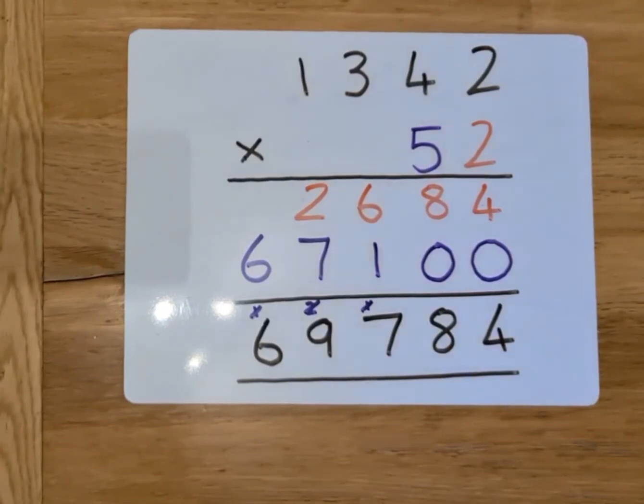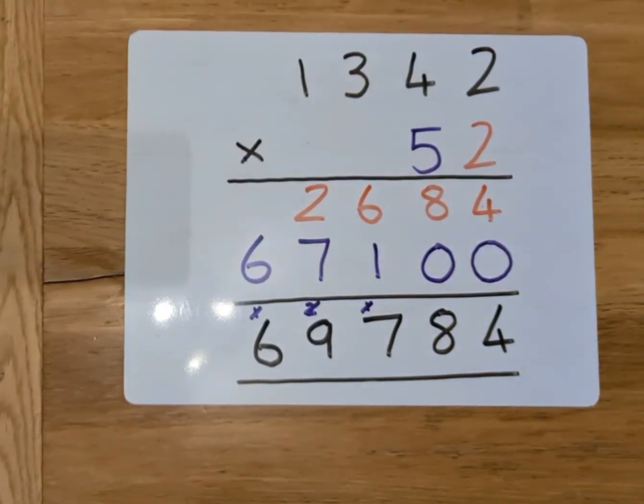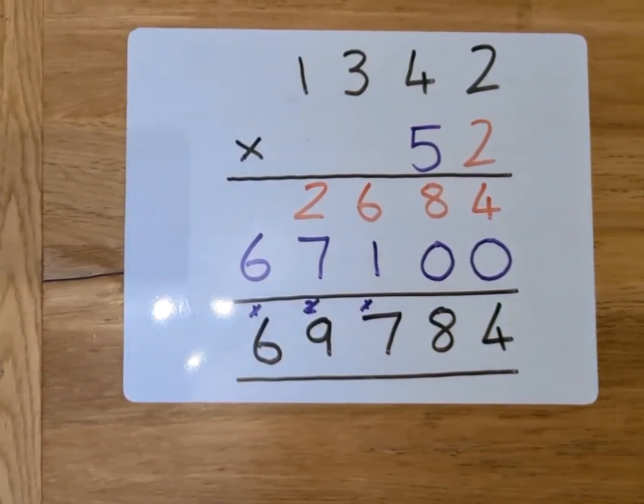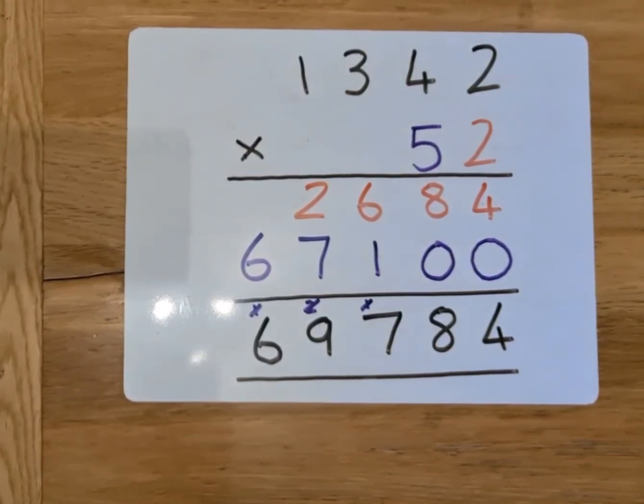Have a go at all the questions on your sheet. Today we're going to be looking at 3 by 2 digit numbers. Tomorrow we'll be looking at 4 by 2 digit numbers. So, check back at this video if you need a reminder on how to lay it out. And have a go at those questions.